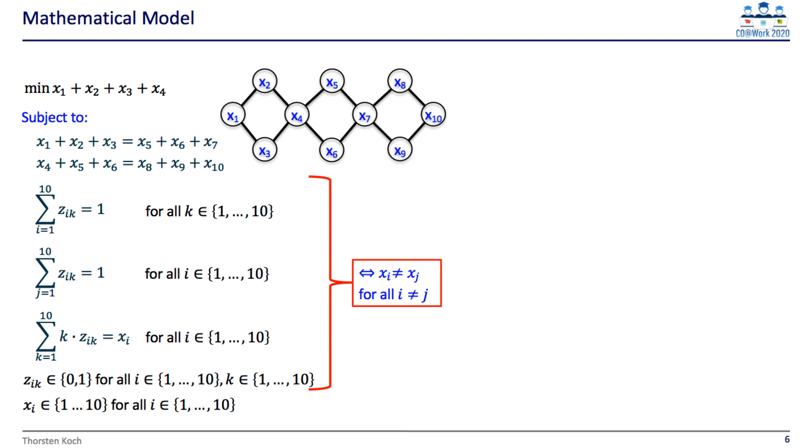Now as I want to end up with an integer linear program I would like to model the all different constraint in another way. I will explain later, why it is not a good idea to model all different using the x variables, though it is technically possible.